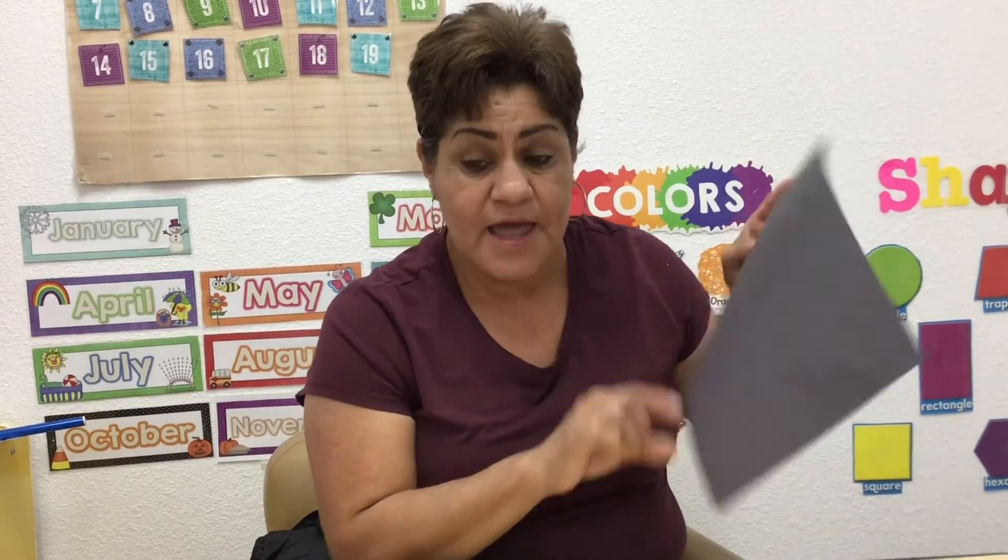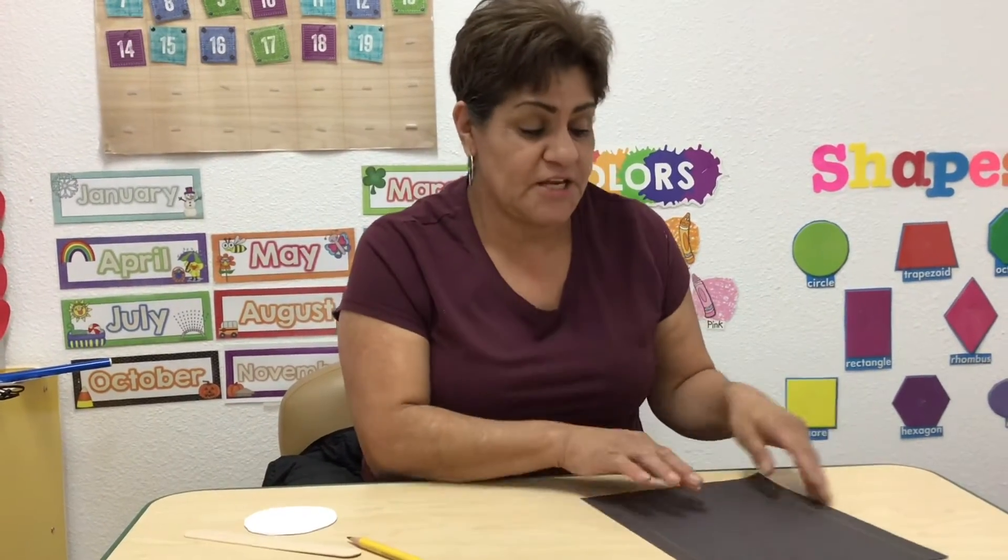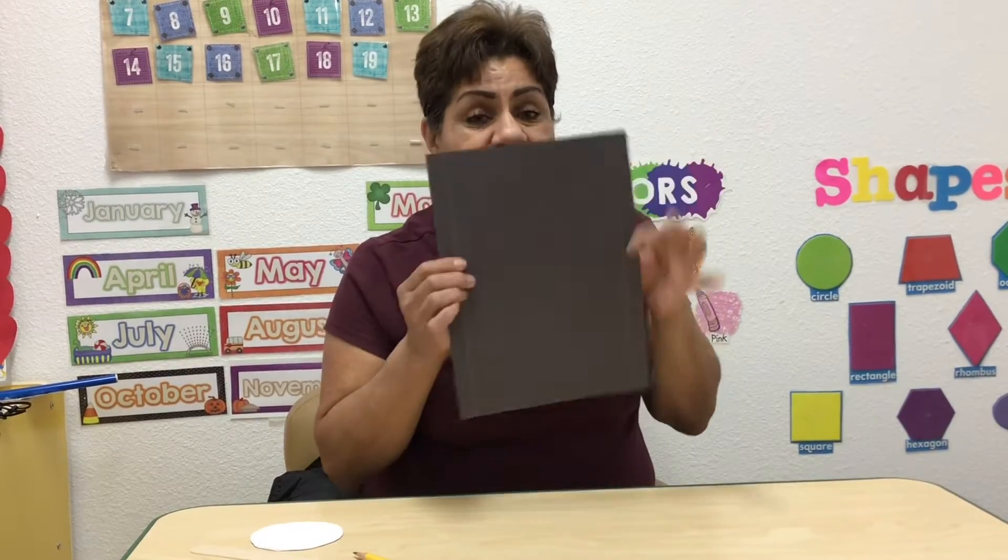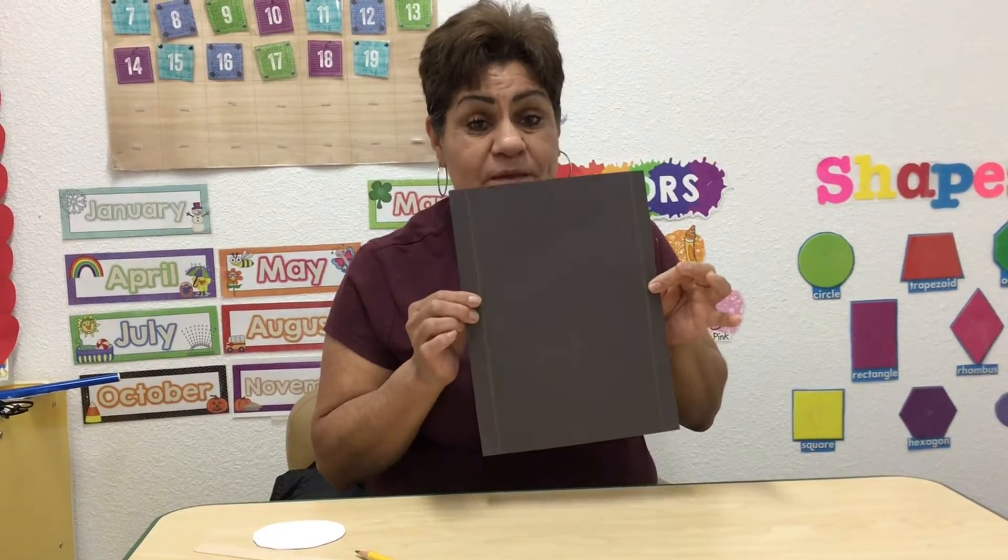Hello, this is Ms. Mercy. This month our theme is going to be about transportation and spring, also the shape of a rectangle and the color black. Since we're going to be talking about transportation, we're going to make a traffic light out of this black construction paper.